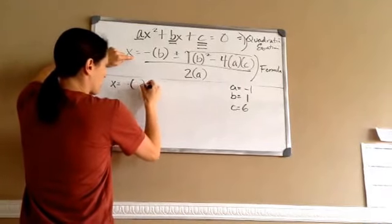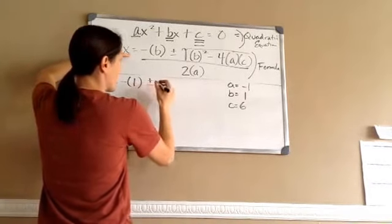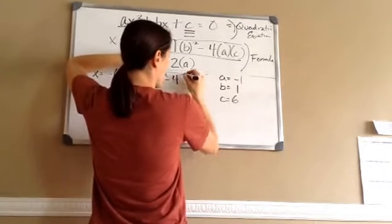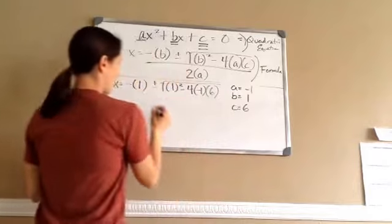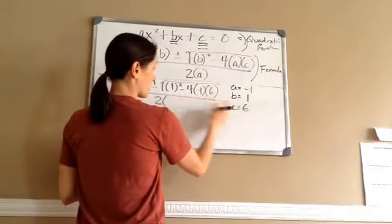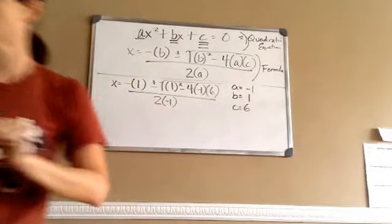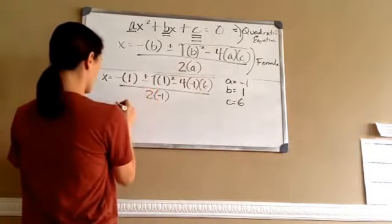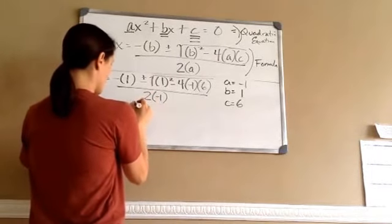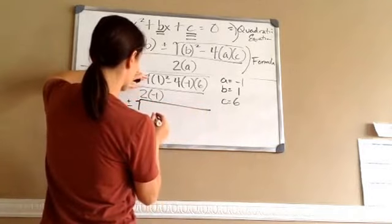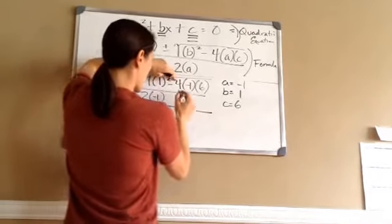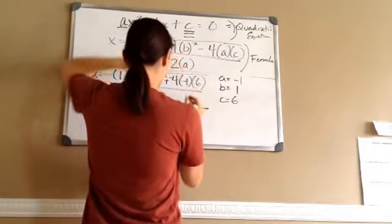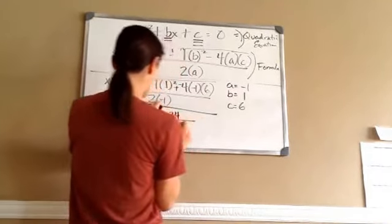X equals negative — remember, keep everything in parentheses — 1, plus or minus the square root of: what's my B? 1 squared minus 4, A is negative 1, and C is 6, all over 2 times negative 1. So negative times 1 is negative 1. 1 squared is 1. Negative 4 times negative 1 is positive 4, and positive 4 times 6 is 24. All over 2 times negative 1 is negative 2.